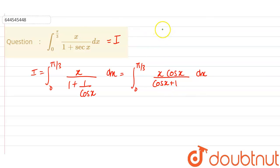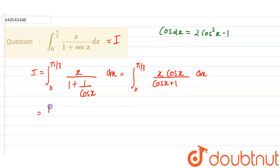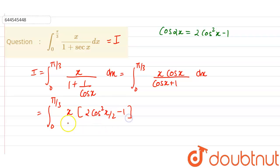There is a formula: cos 2x = 2cos²x − 1. So we have to apply this cos 2x formula here. So cos x can be rewritten as 2cos²(x/2) − 1, divided by 2cos²(x/2) − 1.